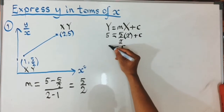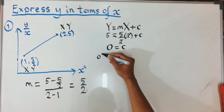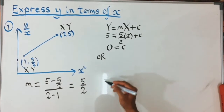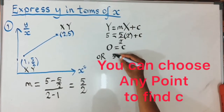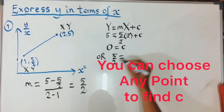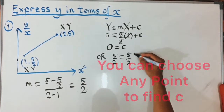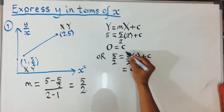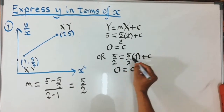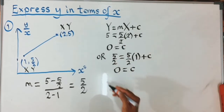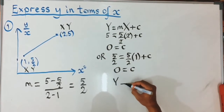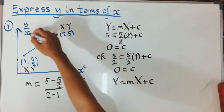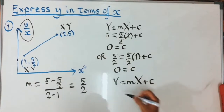From that we get c equals 5 minus 5, which is zero. We can verify with the other point (1, 5/2): substituting in gives 5/2 equals (5/2) times 1 plus c, so c equals 5/2 minus 5/2, which is also zero. Now substituting back into the capital Y equals m times capital X plus c formula: capital Y is the vertical axis, which is y over x.